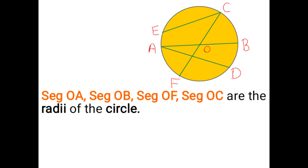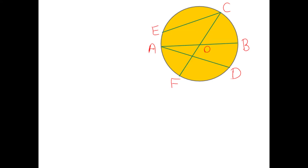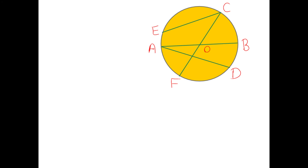Next one is chords. What is called a chord of a circle? Write down this definition: a chord is a straight line joining two points on the circumference of a circle. A chord is a line drawn anywhere fully on the circle. Look at segment EC and segment AD — this line is drawn anywhere on the circle, drawn fully, not half. Diameter is also the longest chord. Segment AB and segment FC are the diameters, and also the biggest chords. Segment AD, segment EC, segment AB, and segment FC are the four chords of the circle.